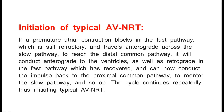Initiation of typical AVNRT: if a premature atrial contraction blocks in the fast pathway — which is still refractory — and travels anterograde across the slow pathway to reach the distal common pathway, it will conduct anterograde to the ventricles as well as retrograde in the fast pathway, which has now recovered, and can conduct the impulse back to the proximal common pathway to re-enter the slow pathway. The cycle continues repeatedly, thus initiating typical AVNRT.